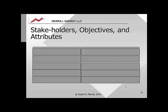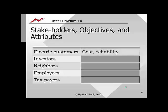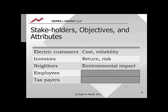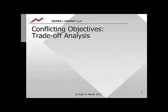There are a number of classes of stakeholders who care about power sector plans. They each have their objectives, measured in attributes. For instance, electrical customers care about cost and reliability, investors are concerned with risk and return, neighbors care about environmental impact, employees care about security, and taxpayers care about tax benefits and burdens. These objectives conflict, and a way of resolving them is through a method known as trade-off analysis.